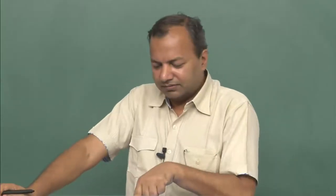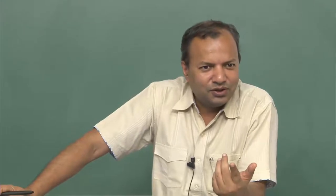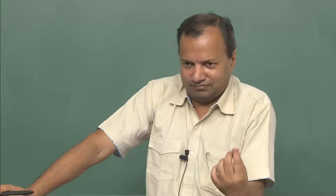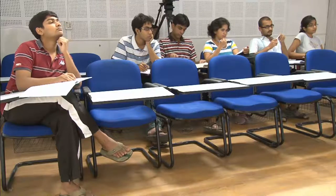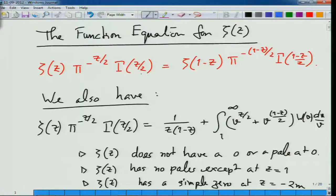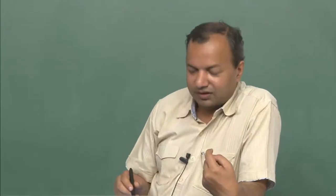There is one more possibility — that Γ(z) may have a pole where Γ(1−z) has a zero of the same order, and they cancel. But we can show that Γ(z) does not have a zero. If Γ(z) = 0 and we go to the functional equation, if Γ(z/2) is zero then ζ must have a pole there. In fact, we derive that ζ has no other pole using the fact that gamma has no zeros.